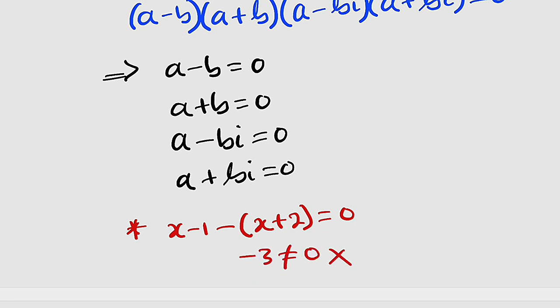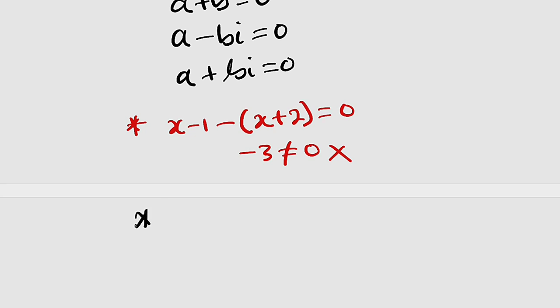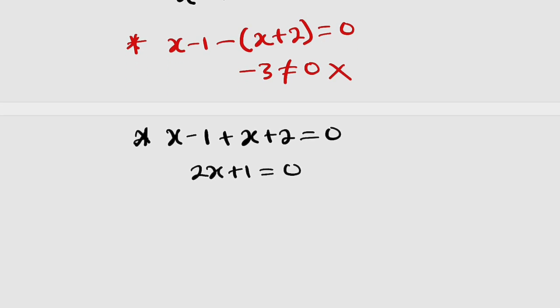Then let us take the second case, where we have x minus 1 as a, then plus b, which is x plus 2, equal to 0. x and x will give us 2x. Minus 1 plus 2 is plus 1, equal to 0. Take 1 to the other side, it becomes negative 1. Divide both sides by 2. You have x equal to negative 1 divided by 2. So this is one solution.